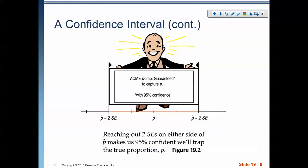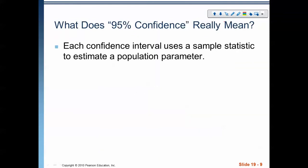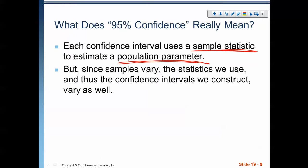So there's a picture of it right there. We've got that p-hat, and there's a 95% chance that the samples will create an interval that has the proportion in it. Each confidence interval uses a sample statistic to estimate a population parameter — a sample we've gathered to estimate something about the population. Samples vary, and thus the statistics we use and the confidence interval we construct will vary as well.